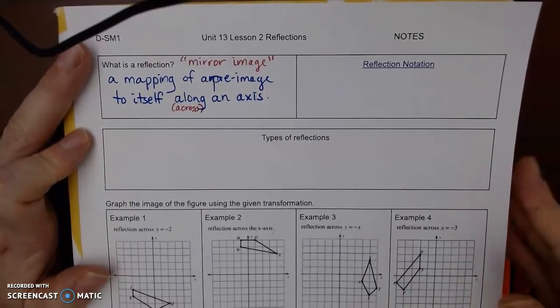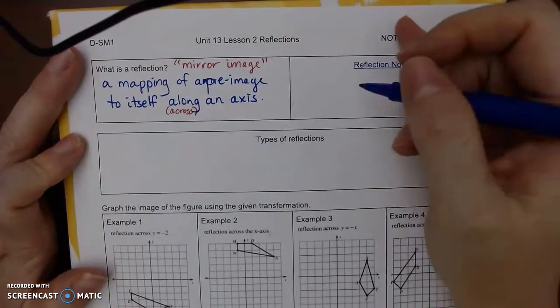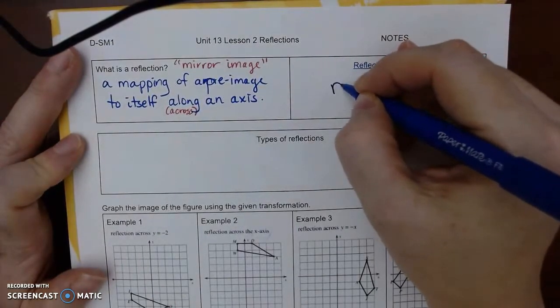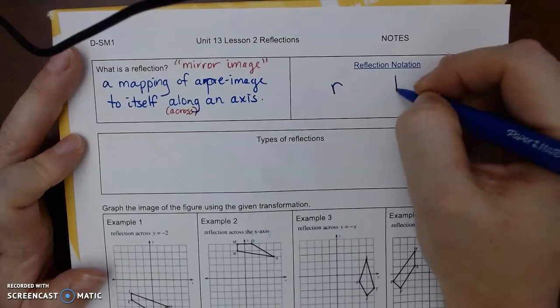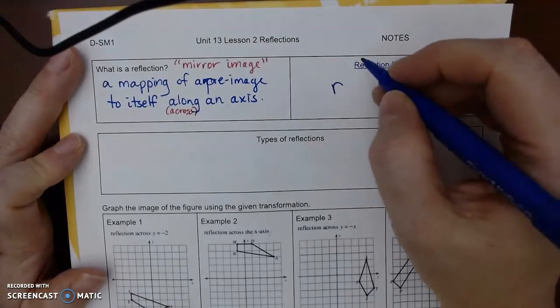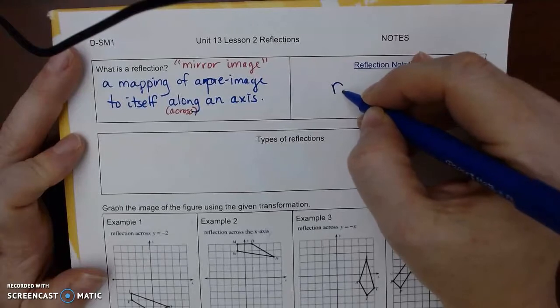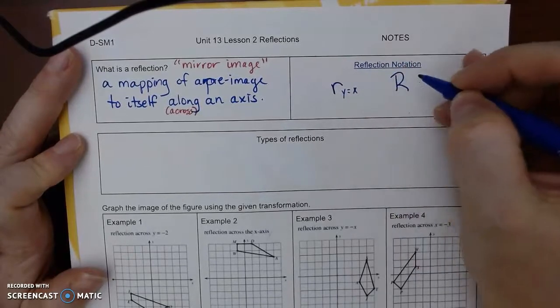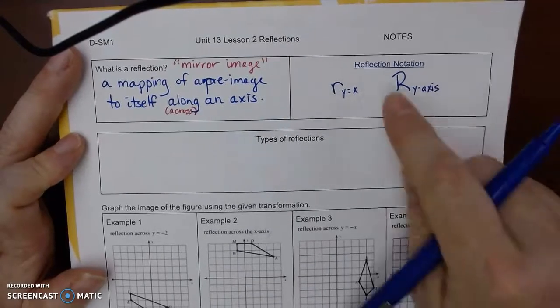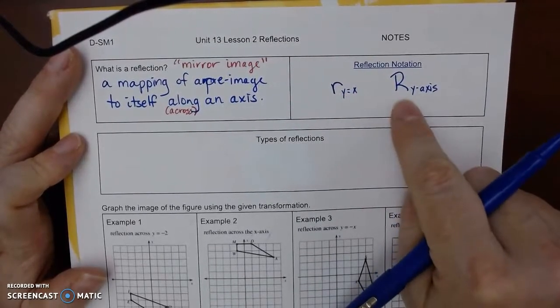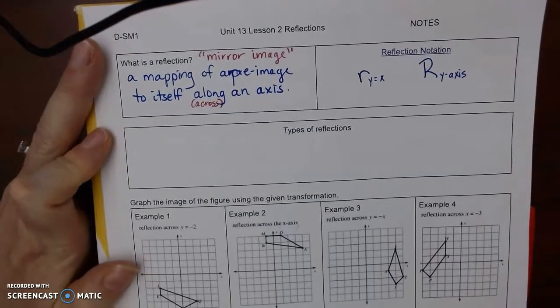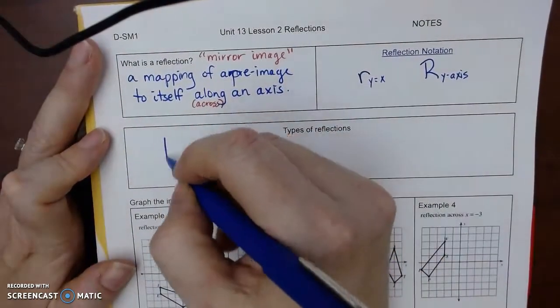The notation can vary, but usually you'll see an R, it can be lowercase or uppercase, and then it will tell you. It looks different than a rotation because you will see like y equals x or y-axis, and so it will tell you. It won't give you 90 degrees, 180 degrees. Okay, so there are a couple of types of reflections.